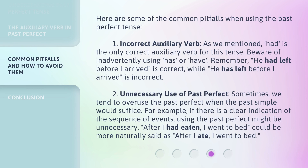Here are some of the common pitfalls when using the past perfect tense. Number 1: Incorrect auxiliary verb. As we mentioned, "had" is the only correct auxiliary verb for this tense. Beware of inadvertently using "has" or "have." Remember, "he had left before I arrived" is correct, while "he has left before I arrived" is incorrect.